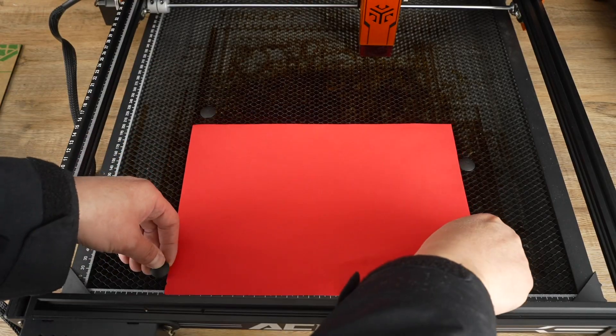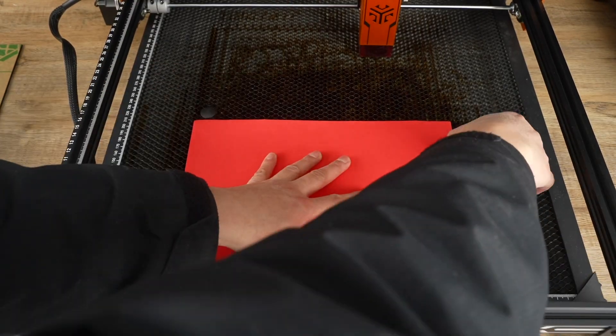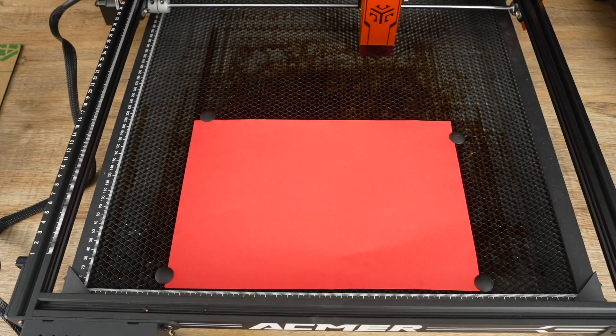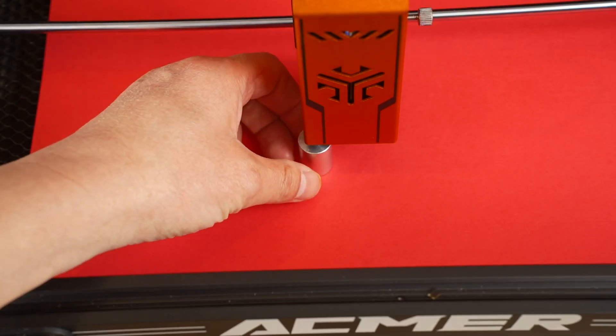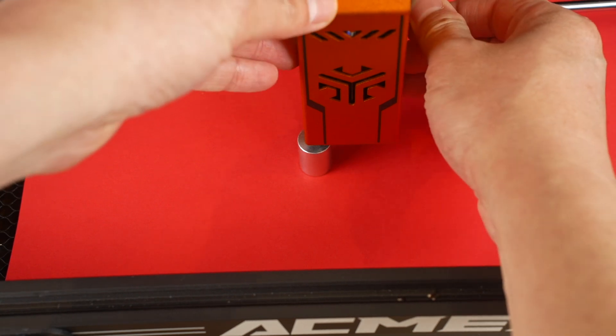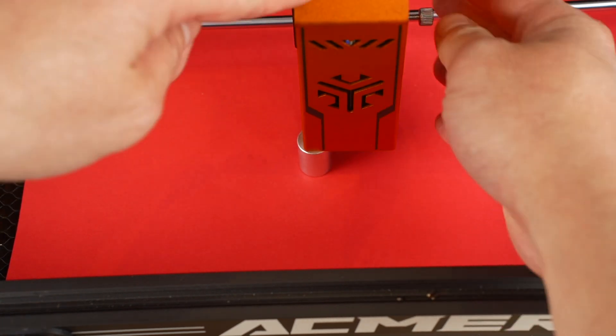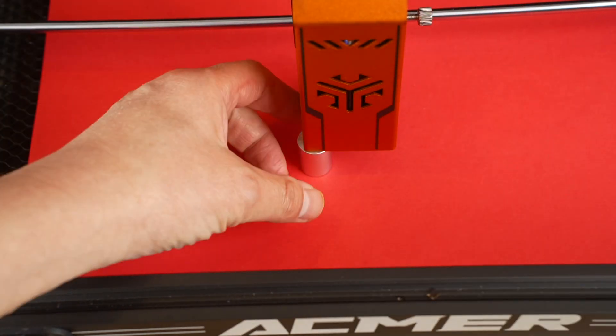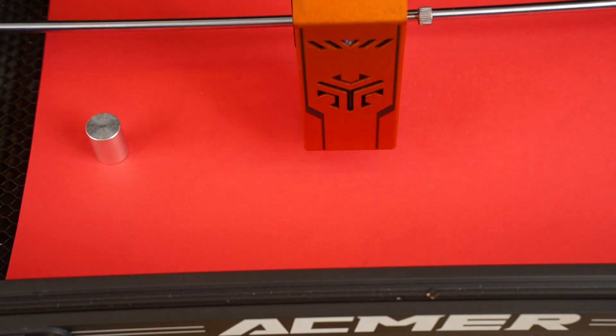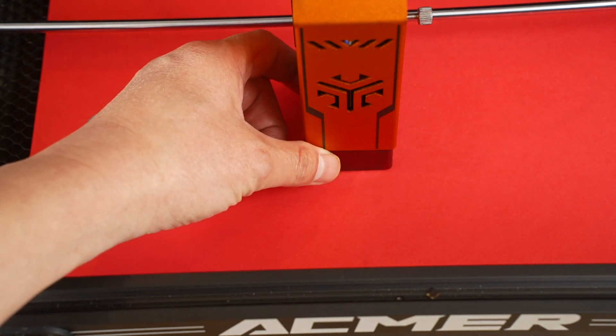We'll kick off our project with paper cutting, using 160 gram paper for the task. Remember to utilize the measuring aluminum column to adjust the position of the laser module accurately. However, I find it somewhat inconvenient to have to remove and replace the laser shield each time adjustments are needed.